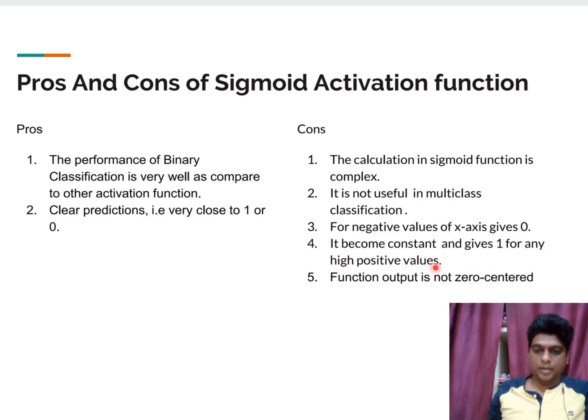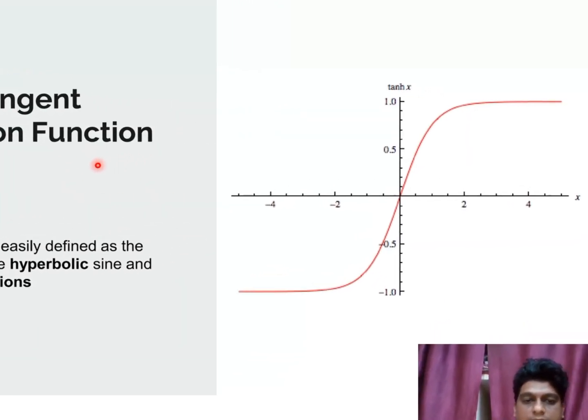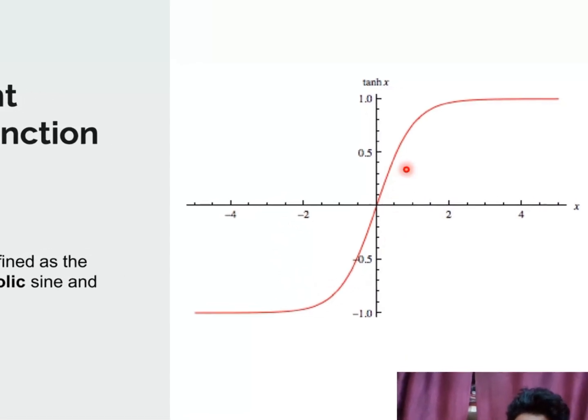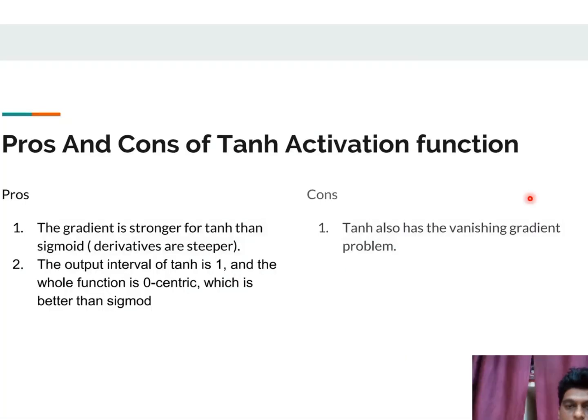The next one is hyperbolic tangent activation function. Here it is a clearly defined ratio between the hyperbolic sine and cosine functions. The pros and cons are it is stronger for a tanh rather than that sigmoid functions and also the output is 1 and the whole function is a zero centric one. It is having a vanishing gradient problem.